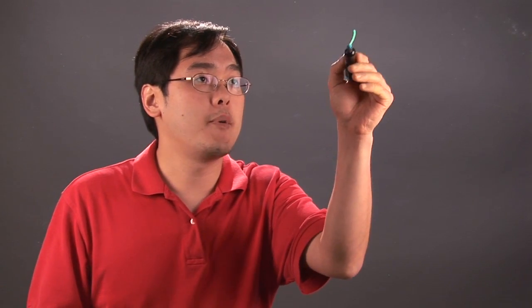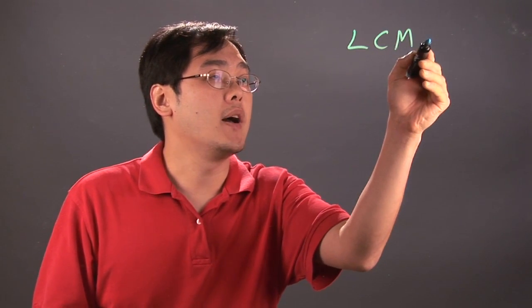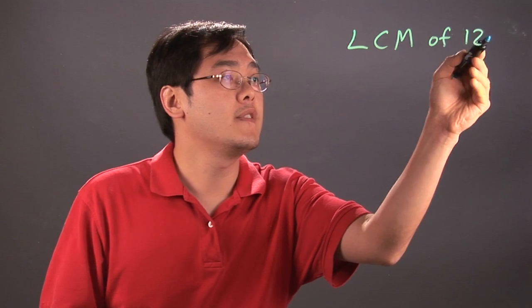So it involves using factoring trees, and we'll see how this is used right now. Suppose you want to find the least common multiple, the LCM, of these numbers, 12 and 18.